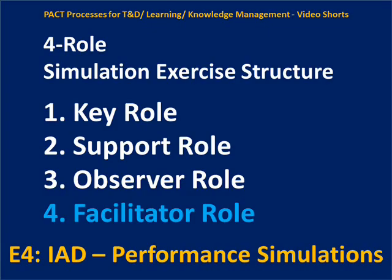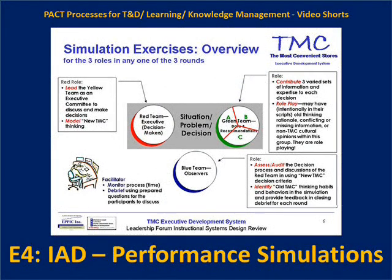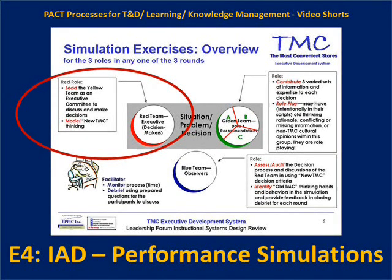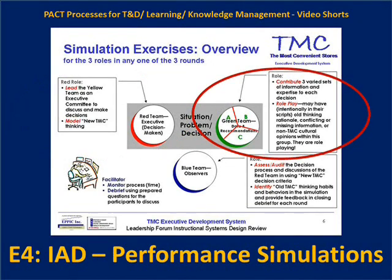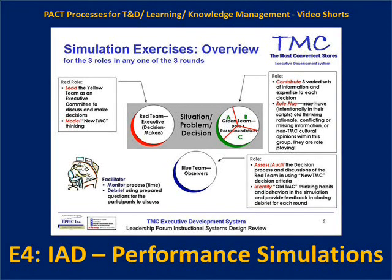In this example of a simulation exercise, there are three roles with the facilitator off to the side. On the left-hand side, the red team are the executive decision makers in this scenario, and the green team is the group giving information to the decision makers so that they can make the decision. The blue team are observers. They've all been through the information and the demonstration — now it's time for application. Everybody theoretically has been trained to know the criteria for task performance and the product to be produced — the decision.